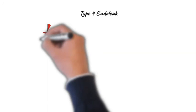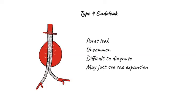Type 4 endoleaks are uncommon. They are thought to be due to the slow seepage of blood through tiny microscopic pores in the material covering the stent graft. They are difficult to diagnose, and you may just notice that the sac is getting larger on serial scans.